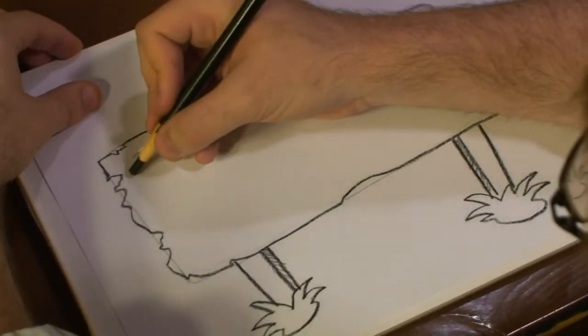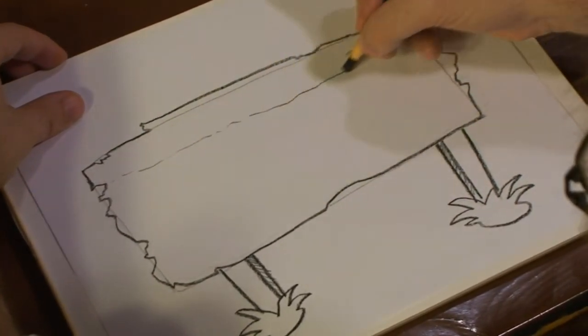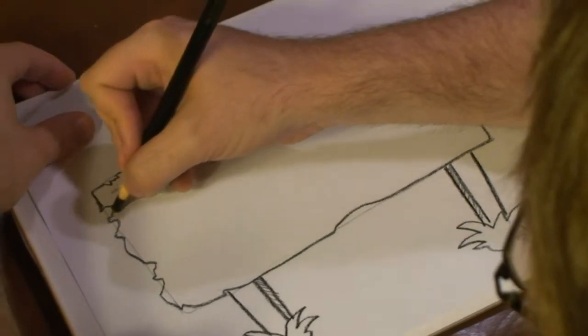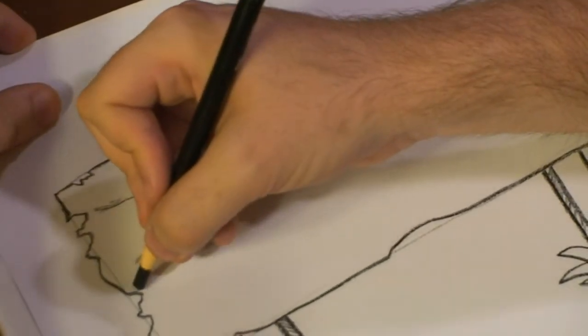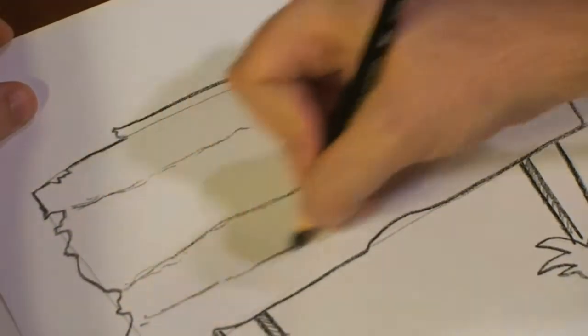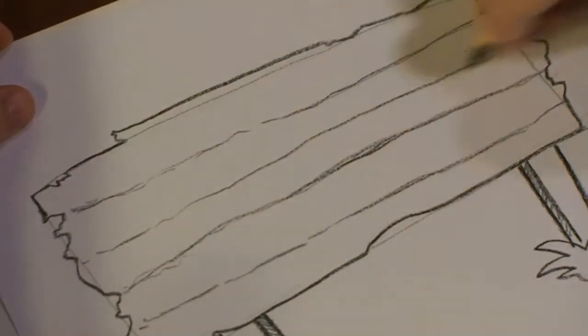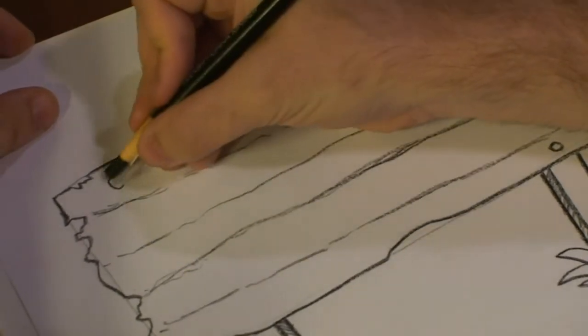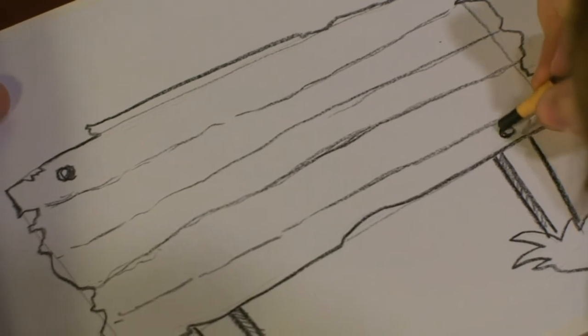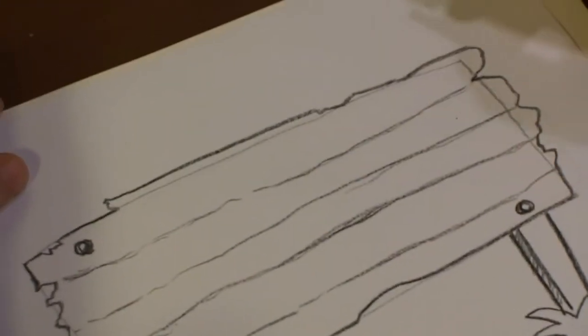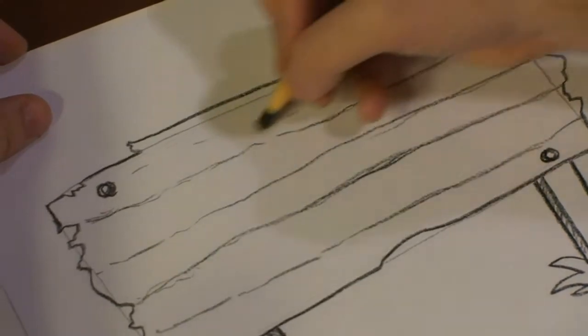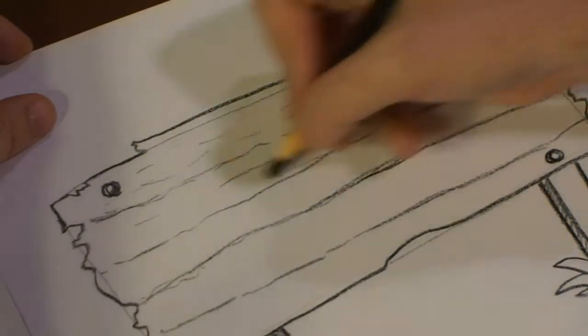But we need to add some more detail to it. So we're going to add some light lines to make it look like the board is separate. A nail here. A little nail there. Then you want to add a few little dashed lines to give it that wood grain feel.